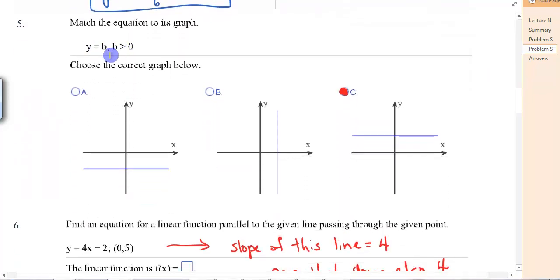Match the equation y equals b. Remember, that's a horizontal line. And it says b is greater than 0. So it has to be a positive. It has to be up here above the x-axis. So it can't be this one. We know it's not vertical. It's got to be this one.